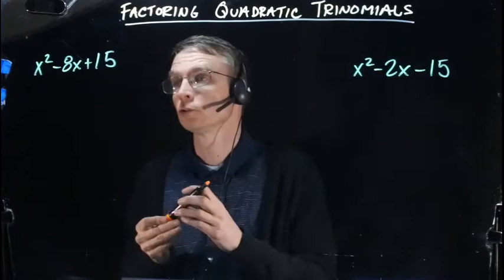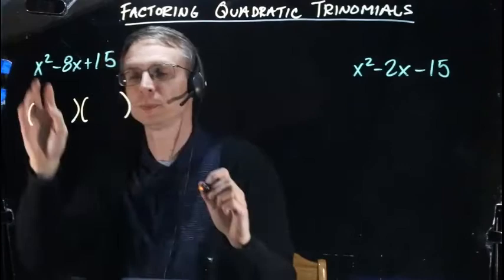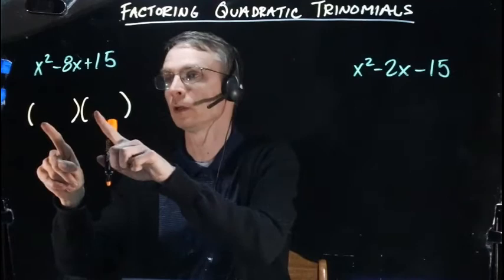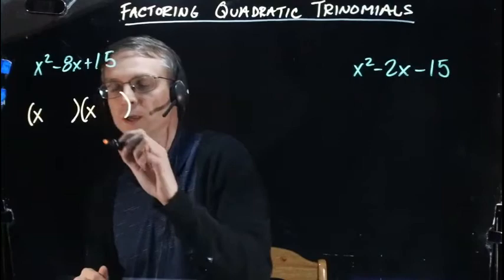We're going to make two sets of parentheses to factor this into two binomials. First, we need to factor x² and put it in these first spots. We need an x in each binomial, so the only way that works is x times x.